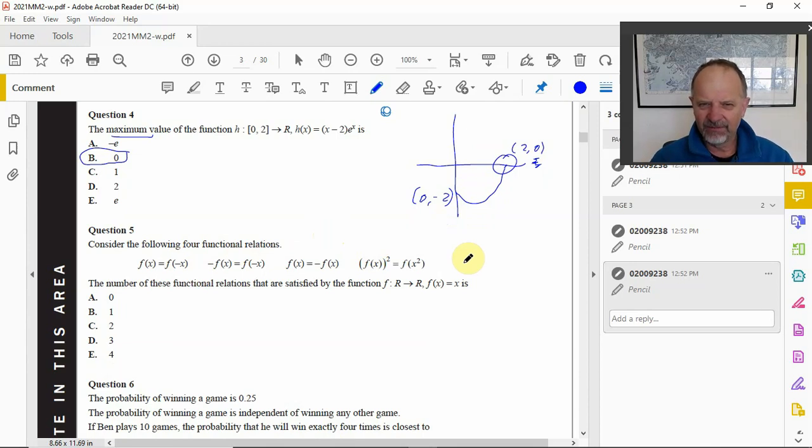The number of these functional relations that are satisfied by the function f(x) = x. In this case what I would be doing is I would be trying this in each of them.